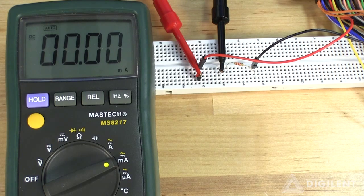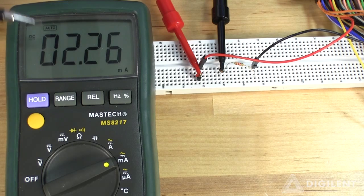Turning on power, we're actually measuring a current of about 2.26 milliamps, which is extremely close to our prediction of 2.27.